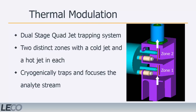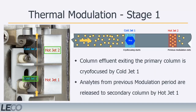The modulator cryogenically traps and focuses the analyte stream prior to vaporizing the condensed liquid with a hot jet. In the first stage, the effluent exiting the primary column is cryofocused using cold jet number 1. Simultaneously, hot jet number 2 is turned on to release the analytes from the previous modulation and into the secondary column.